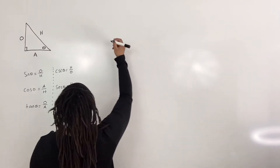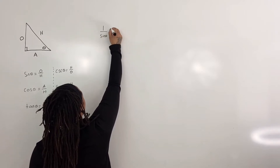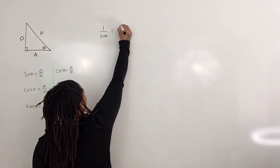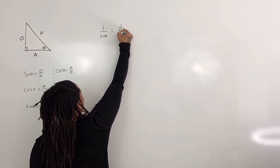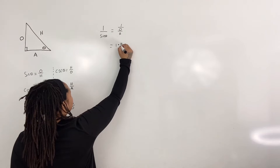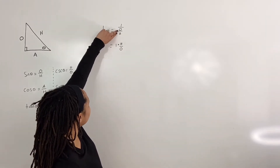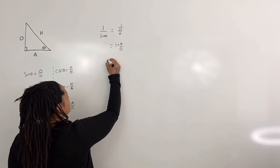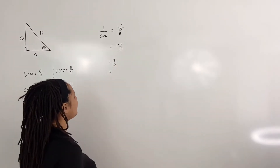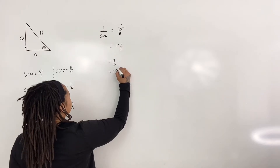We begin with 1 over sine of theta. Sine of theta is equal to opposite over hypotenuse, so this is equal to 1 over opposite over hypotenuse. But that is just equal to 1 times hypotenuse over opposite, because when you divide by a fraction you multiply by the reciprocal. So this is equal to hypotenuse over opposite, which is equal to cosecant of theta.